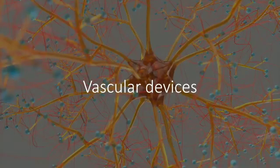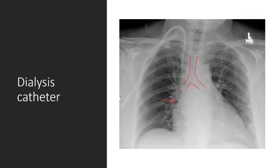Next, we're going to go over the most commonly used vascular devices. This image demonstrates a tunneled dialysis catheter, tunneled under the skin towards the internal jugular vein, heading caudad towards the cavoatrial junction. Most central venous catheters need to terminate at the cavoatrial junction. You may see a little bump where the SVC ends and the right atrium starts — that would be the cavoatrial junction.